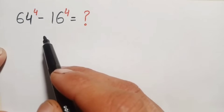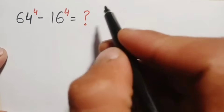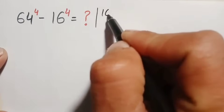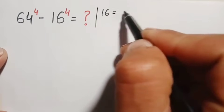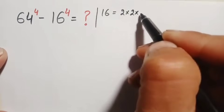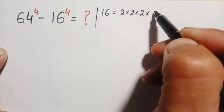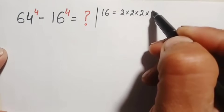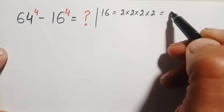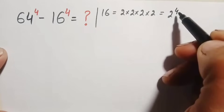First of all, we can write 16 as 2 × 2 = 4, 4 × 2 = 8, and 8 × 2 = 16. So 2 appears 4 times, meaning we can write this as 2 raised to the power 4 in exponential form.